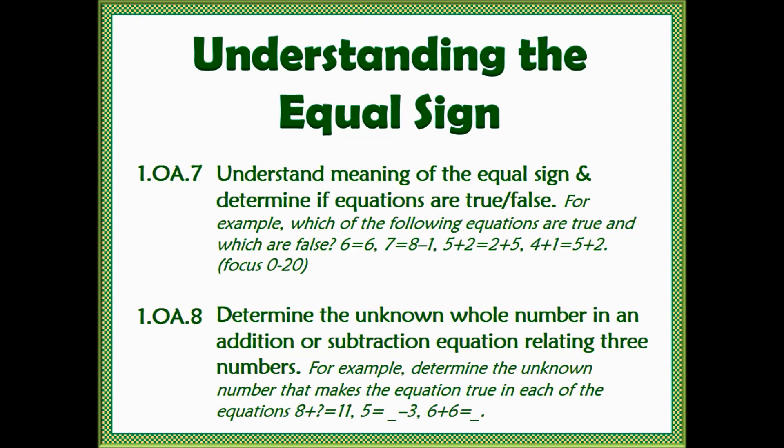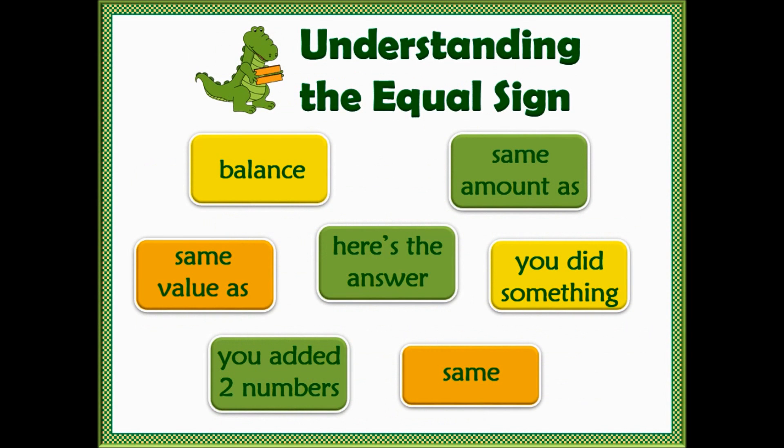First grade standard 088 asks students to identify the missing number in an equation which directly relates to students' understanding of the equal sign. When teaching the meaning of the equal sign, we need to identify any misconceptions students may have. This may be done by facilitating a conversation about what they believe to be the meaning of the equal sign.